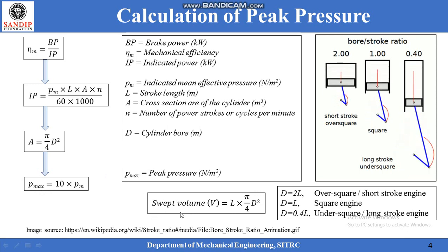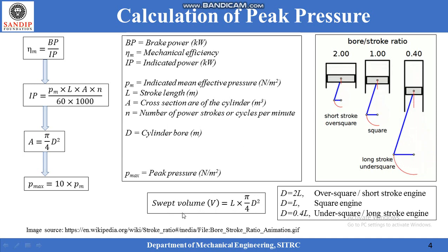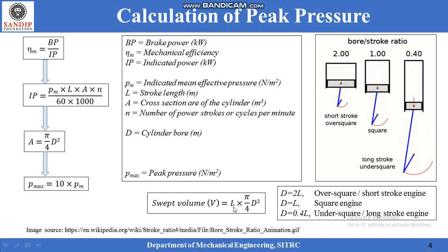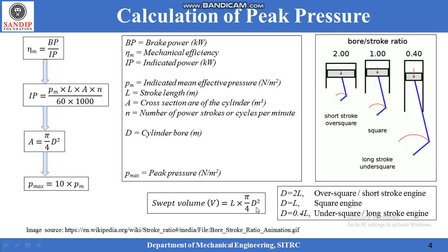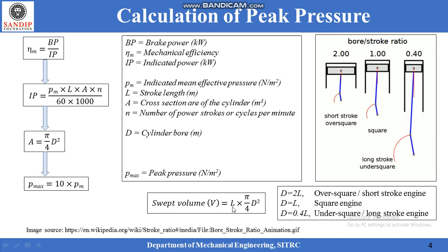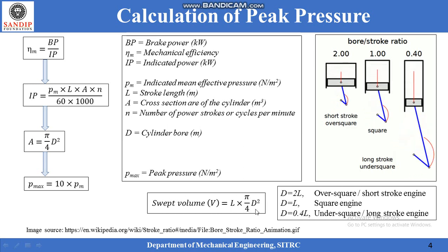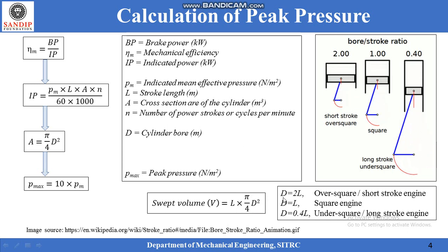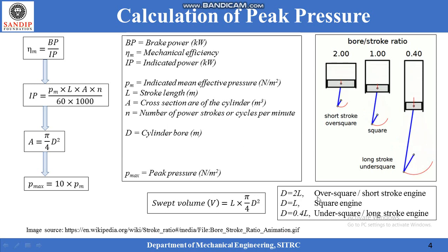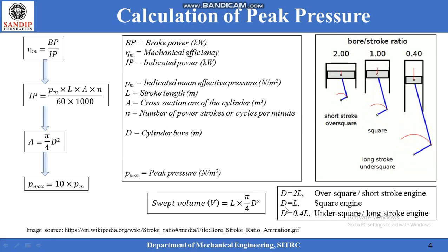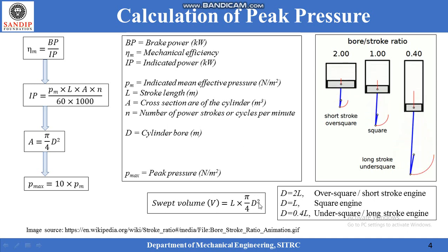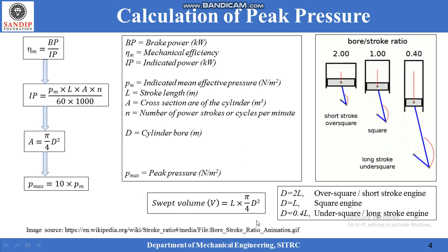Swept volume can be given by L × (π/4) × D². For a known value of swept volume, an infinite combination of stroke and diameter are present. In the formula these two are unknown whereas only one equation is available, so we have to express stroke and bore in terms of each other to solve this problem. Either the bore is considered higher than the stroke — called an over-square engine — or it is equal to the stroke, or the bore is considered smaller than the stroke. Then the problem of calculating bore and stroke can be solved.